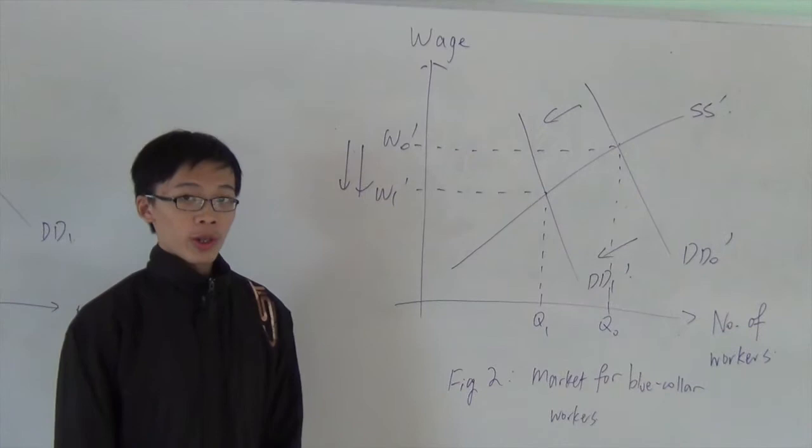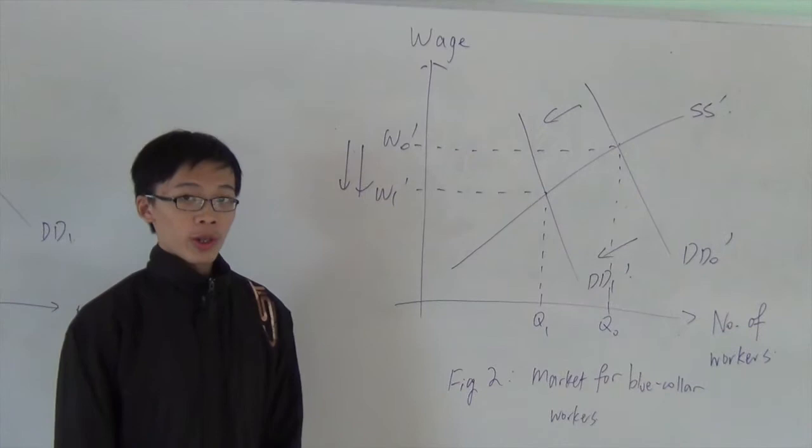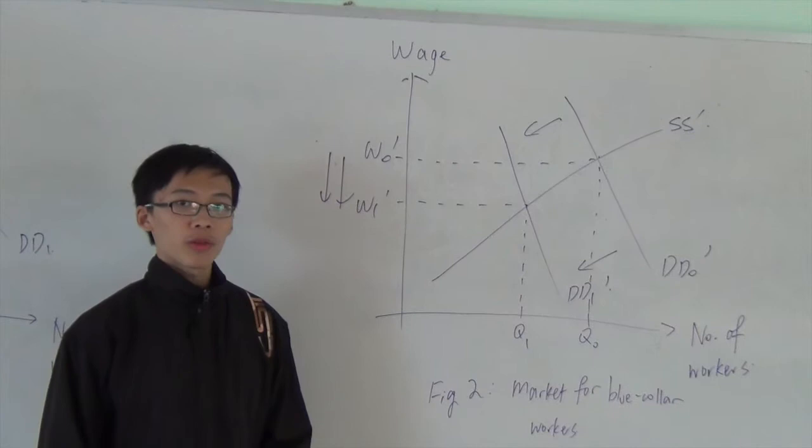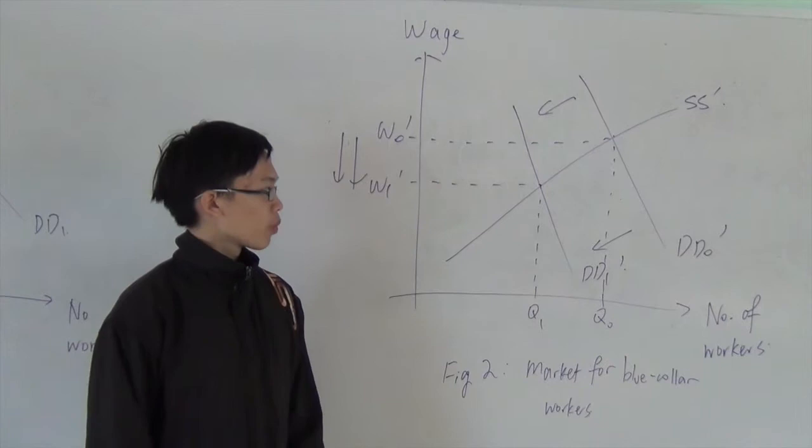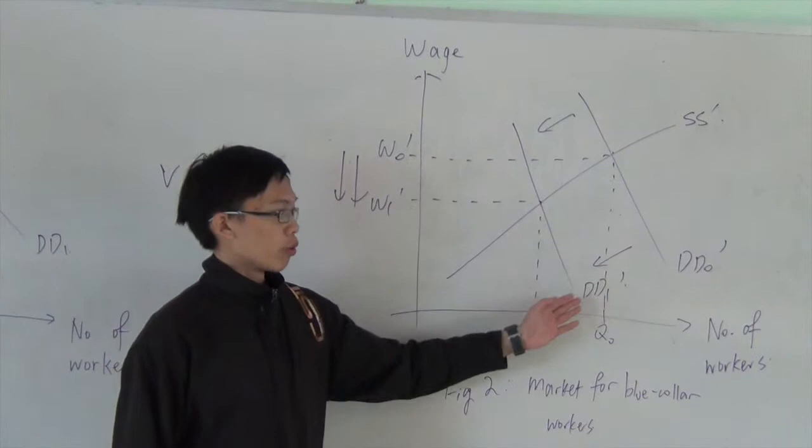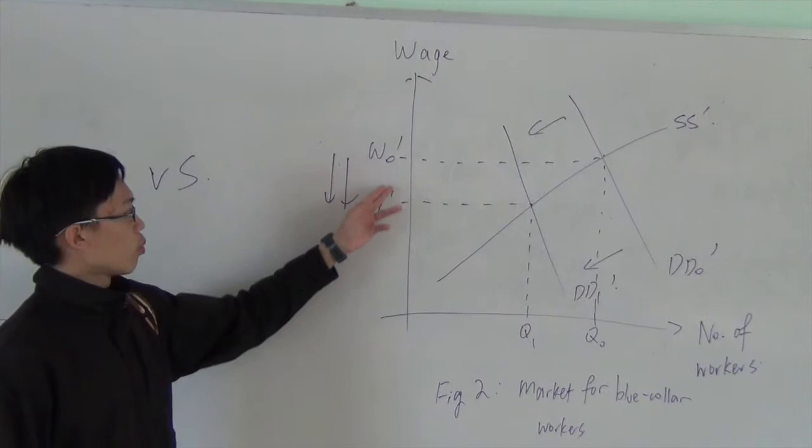Now we turn our attention to the market for blue collar workers. These workers are people who have low levels of education and are only able to handle menial tasks and jobs. Due to the aforementioned reasons explained before, the demand for blue collar workers is actually dropped from D0 to D1. This causes their wages to fall from W0 to W1.